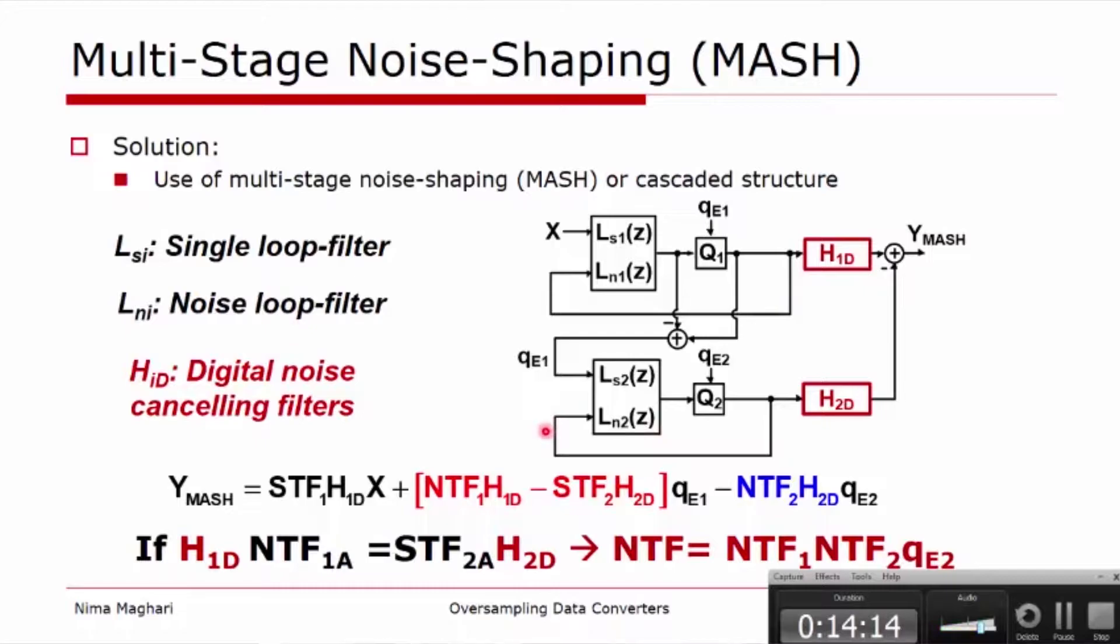And again here the notations are as follows for signal, noise and noise loop filter, and the red part here shows the digital noise cancelling filter. And if you work out the math, which is fairly straightforward, you'll realize that if the H1 digital filter times noise transfer function of the first loop is equal to the signal transfer function of the second loop times the digital transfer function at the output, then we will only see the quantization error of the last stage at the output shaped by the overall order of the modulator. So if you have three first order modulators, you get third order noise shaping.